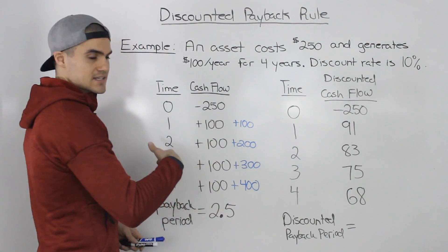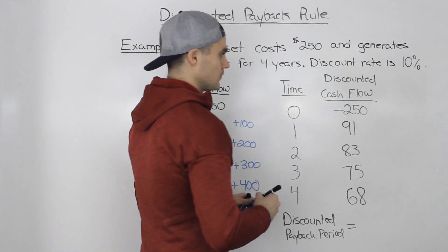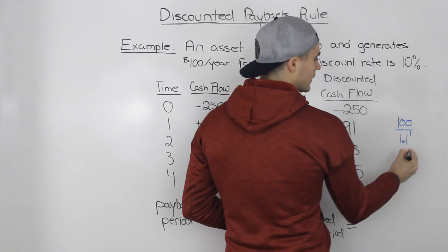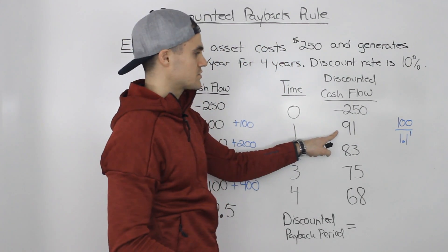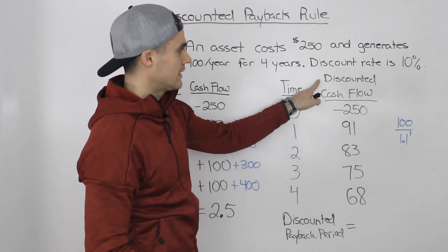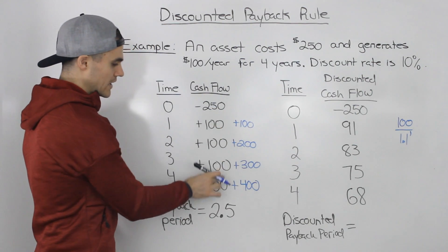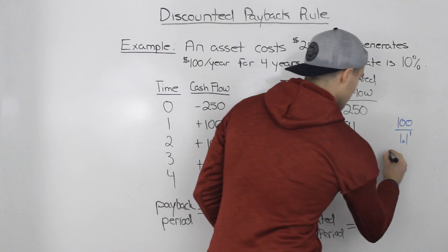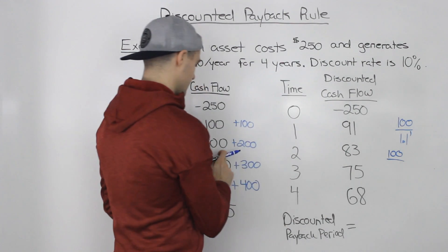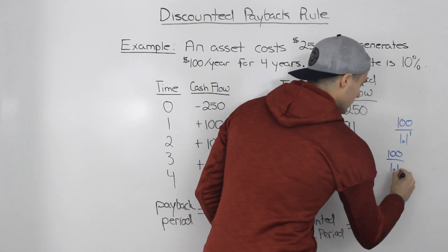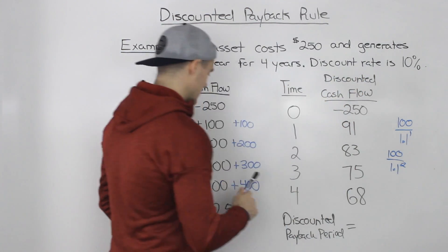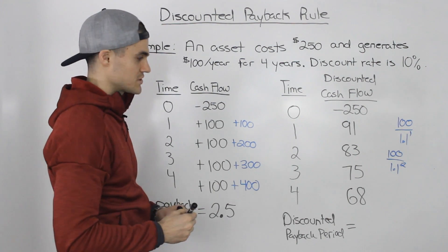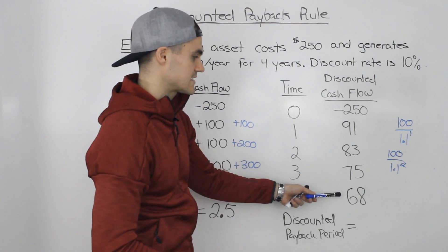This $100 happens in one year, so we take that $100 and discount it by 10% for one year, giving us $91. The $100 in year two is discounted by 10% for two years, giving us $83. Then the $100 in year three discounted for three years gives $75, and the $100 in year four discounted for four years gives $68.